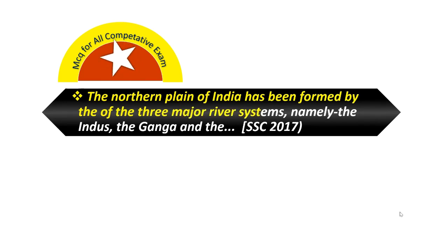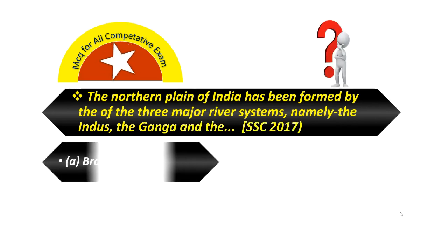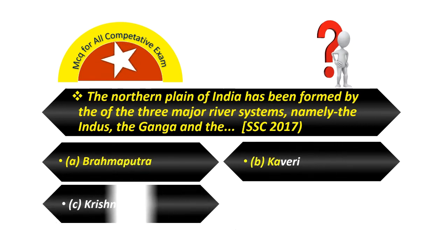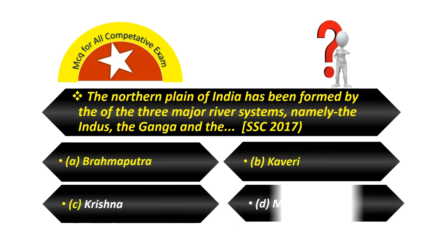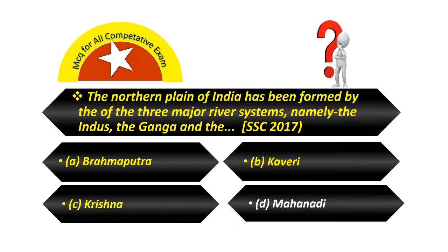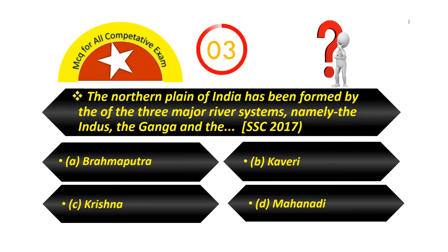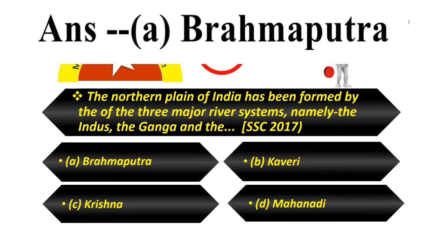The northern plain of India has been formed by the alluvium of three major river systems, namely Indus, Ganga, and ___. Option A — Brahmaputra. Option B — Cauvery. Option C — Krishna. Option D — Mahanadi. The answer is Brahmaputra.